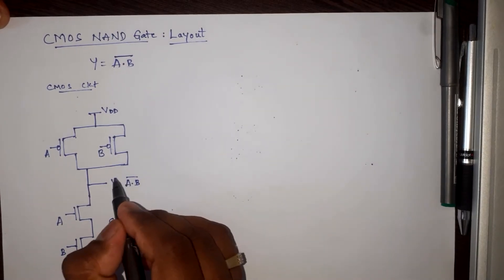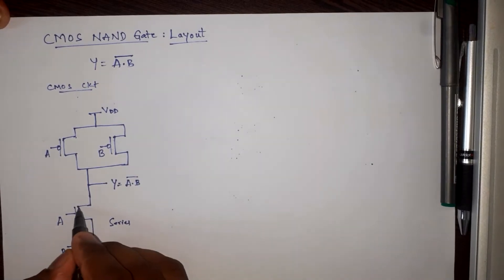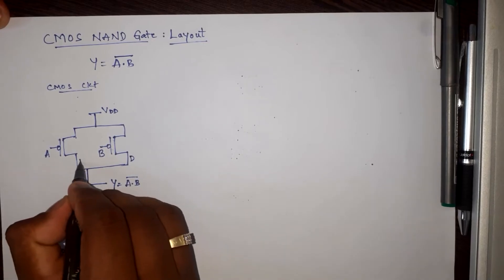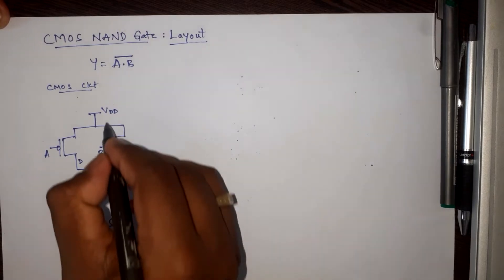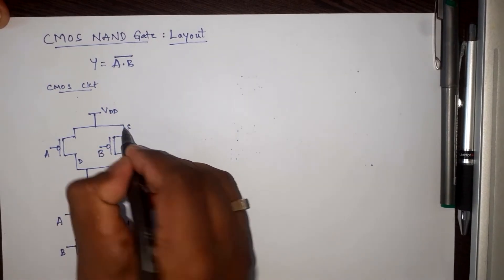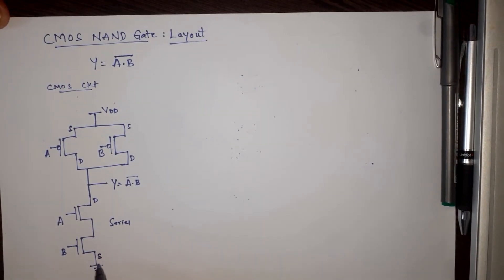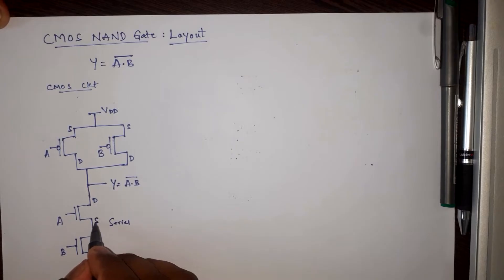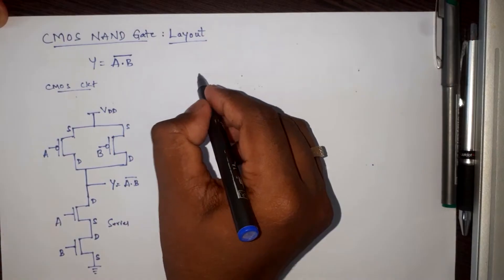Before going to the layout, we need to identify the terminals. These two transistors are connected together, and this transistor's node is taken as the output — these are always drains, and from the drains we take the output. Since VDD is at the source, we connect the source terminal of the PMOS transistors to VDD. Similarly, the ground terminal is the source of the NMOS, and the remaining terminal becomes drain or source accordingly.